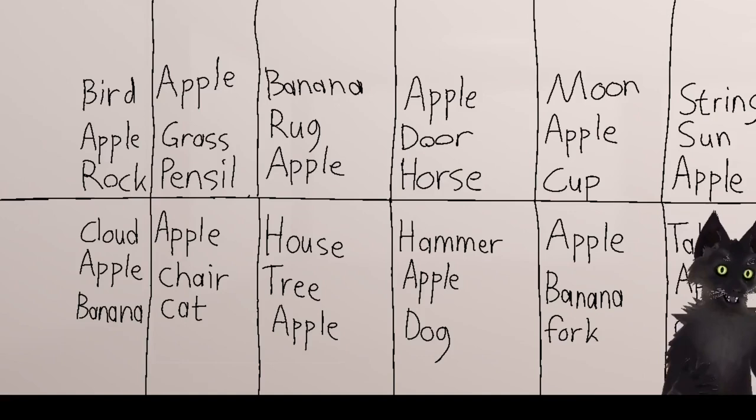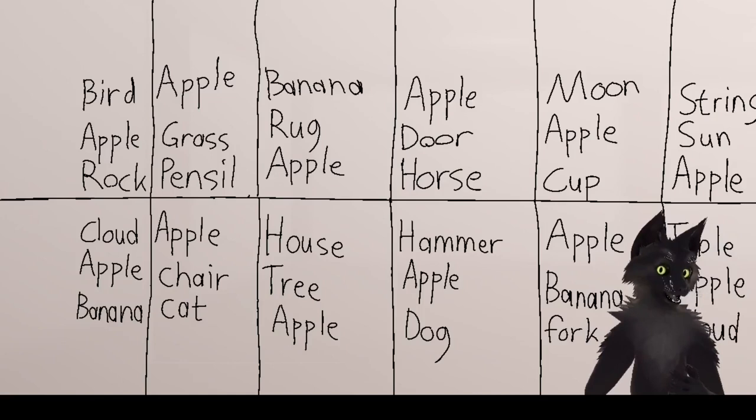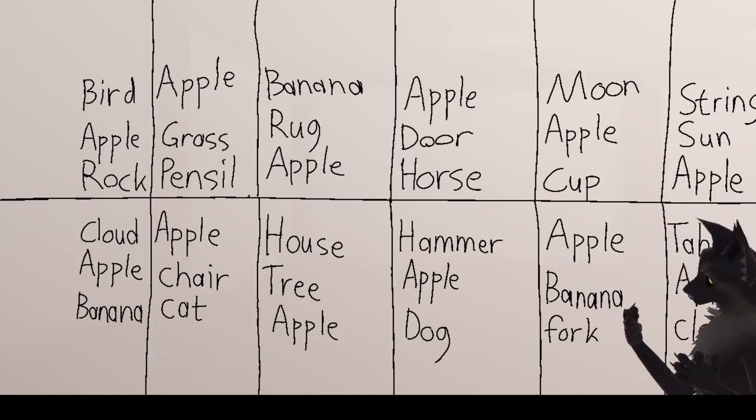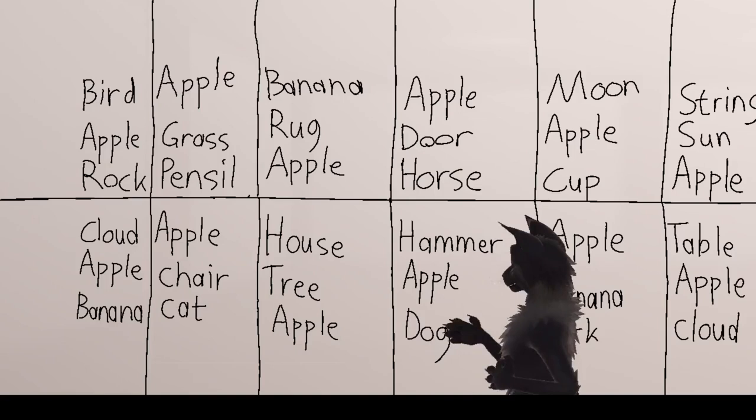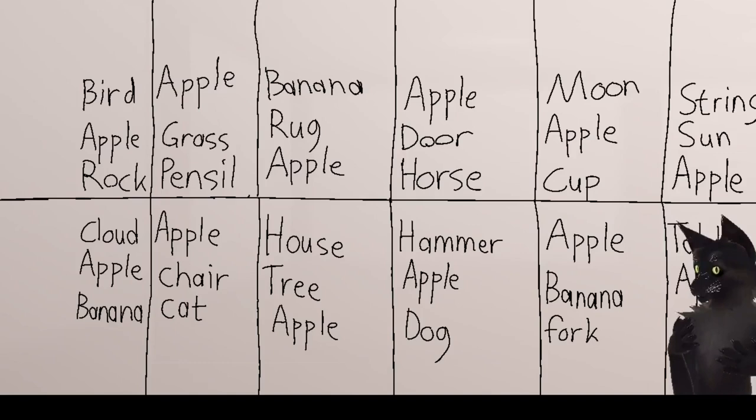Here is a chart representing a dozen different neurons. Each box shows the objects that the neuron is supposed to detect. This chart should really have about a million more boxes on it, but let's just focus on the dozen that I've shown. For example, this neuron would represent a house, a tree, or an apple. And this box would represent a neuron that detects a hammer, an apple, or a dog. And this box represents a neuron that detects an apple, a banana, or a fork.